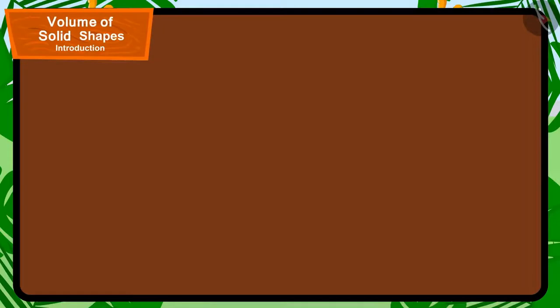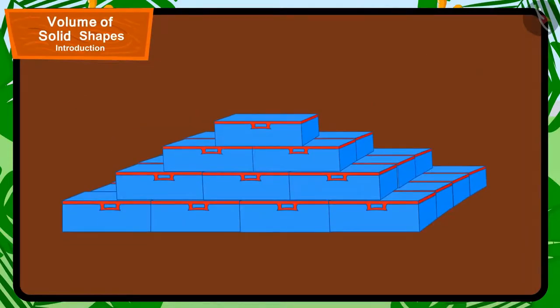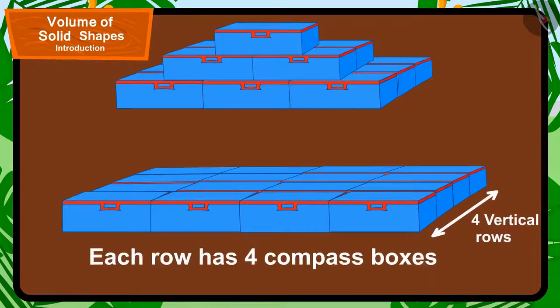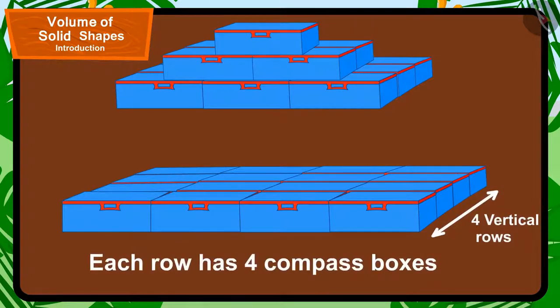Let's first figure out the number of compass boxes being used in this shape. The lowest layer of this shape has 4 vertical rows and each row has 4 compass boxes.